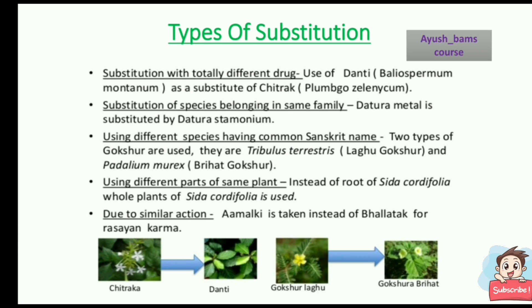Types of substitutions: substitution with a totally different drug, such as use of Danti as a substitute for Chitraka; substitution of species belonging to the same family, like Datura metel substituted by Datura stramonium; using different species having a common Sanskrit name — two types of Gokshura are used: Laghu Gokshura and Brihad Gokshura; using different parts of the same plant — instead of the root of Sida cordifolia, the whole plant is used; and due to similar action, Amalaki is taken instead of Bhallataka for Rasayana karma.